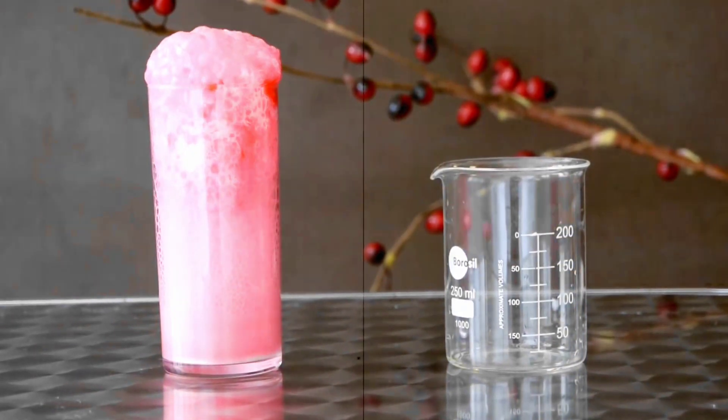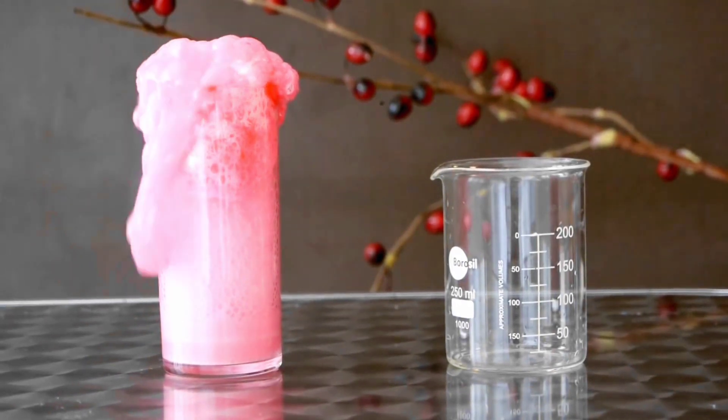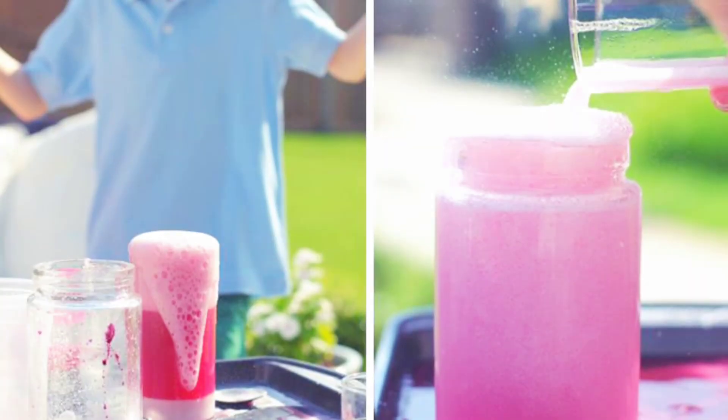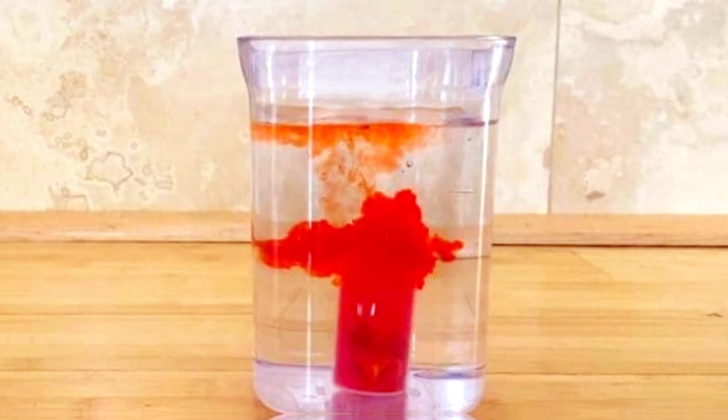For added fun, you can also add a few drops of red food coloring to the vinegar before pouring it in, making the lava look more realistic. It's an explosive and interactive experiment that will leave kids amazed and eager to explore more about the fascinating world of science.